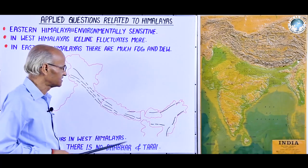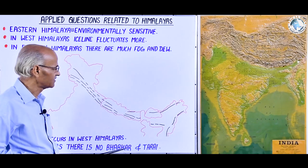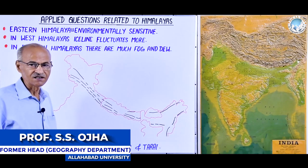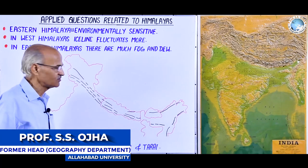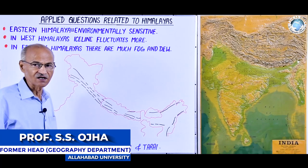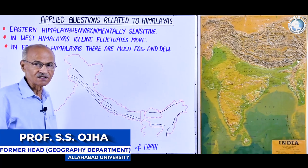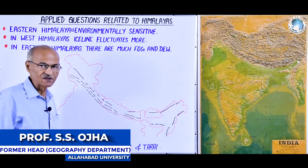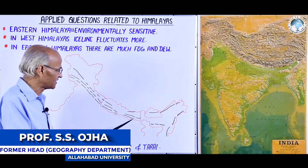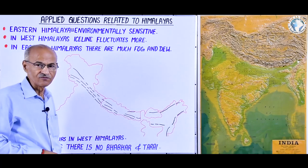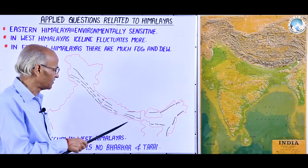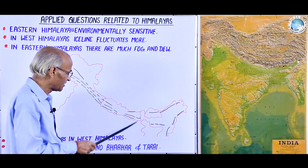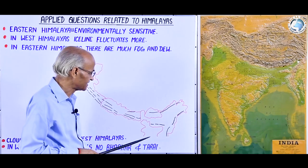An important question is: why is the Eastern Himalayas environmentally very sensitive? All parts of the Himalayas — Western, Eastern, and Middle — are sensitive environmentally. When discussing environmental sensitivity, you should cover lithosphere, atmosphere, hydrosphere, biosphere, and especially pedosphere, on which the biosphere of that region depends and which supports life and people. We need to focus on how the Eastern Himalayan environment is sensitive in each of these aspects.